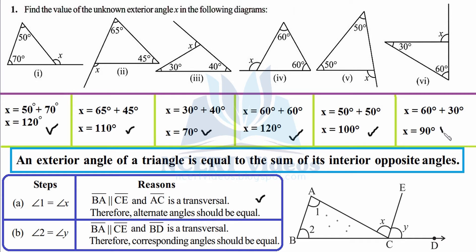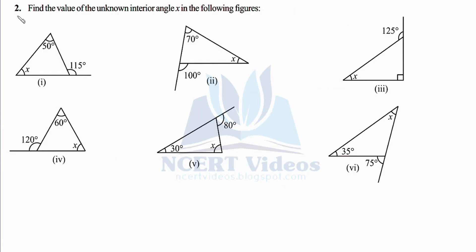The next exterior angle: 50 plus 50 gives 100°. Then 60 plus 30 gives 90 degrees. By observation you can say it appears to be 90°, although in geometry you should not assume things unless you can prove it or it is given. That was question number one.